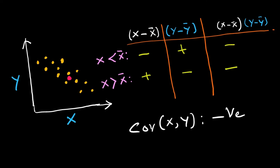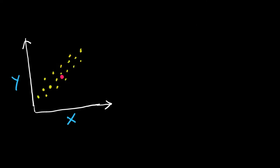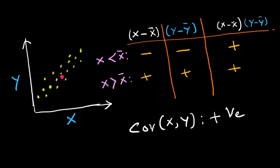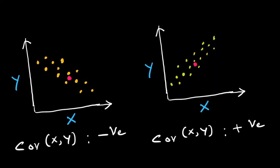In another example, the relation between X and Y is positive — Y increases as X increases. Using our earlier logic, the covariance here is positive. So the sign of the covariance shows the tendency in the linear relationship of two variables.